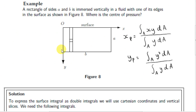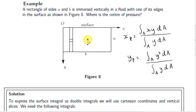Let's see an example. We have a rectangle of sides A and B immersed vertically in a fluid with one of its edges in the surface. Intuitively, we would guess that the center of pressure is midway along the horizontal side of the rectangle but below the geometrical center, because pressure increases with depth. If it were at the geometrical center, there would be more pressure below that point than above it, so we expect the center of pressure to be below the geometrical center.